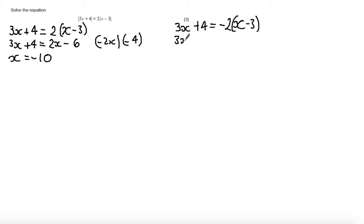So when I expand this, I get 3x plus 4 equals 6 minus 2x, and this time I'm going to add 2x to both sides of the equation.